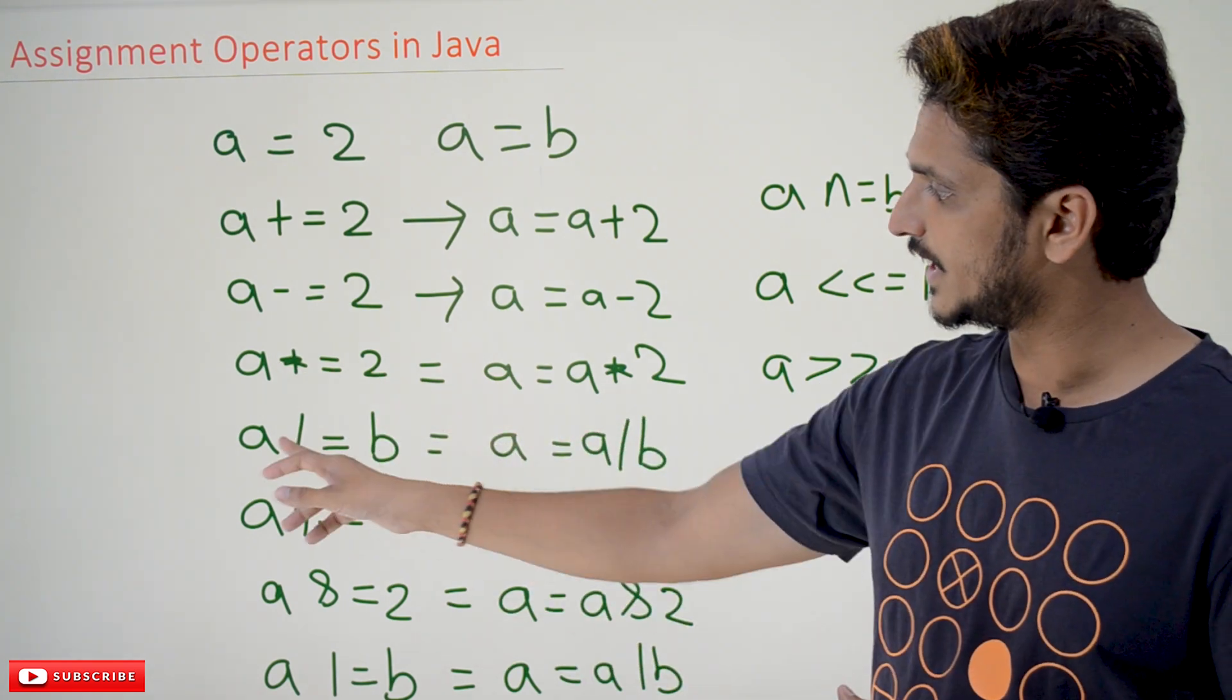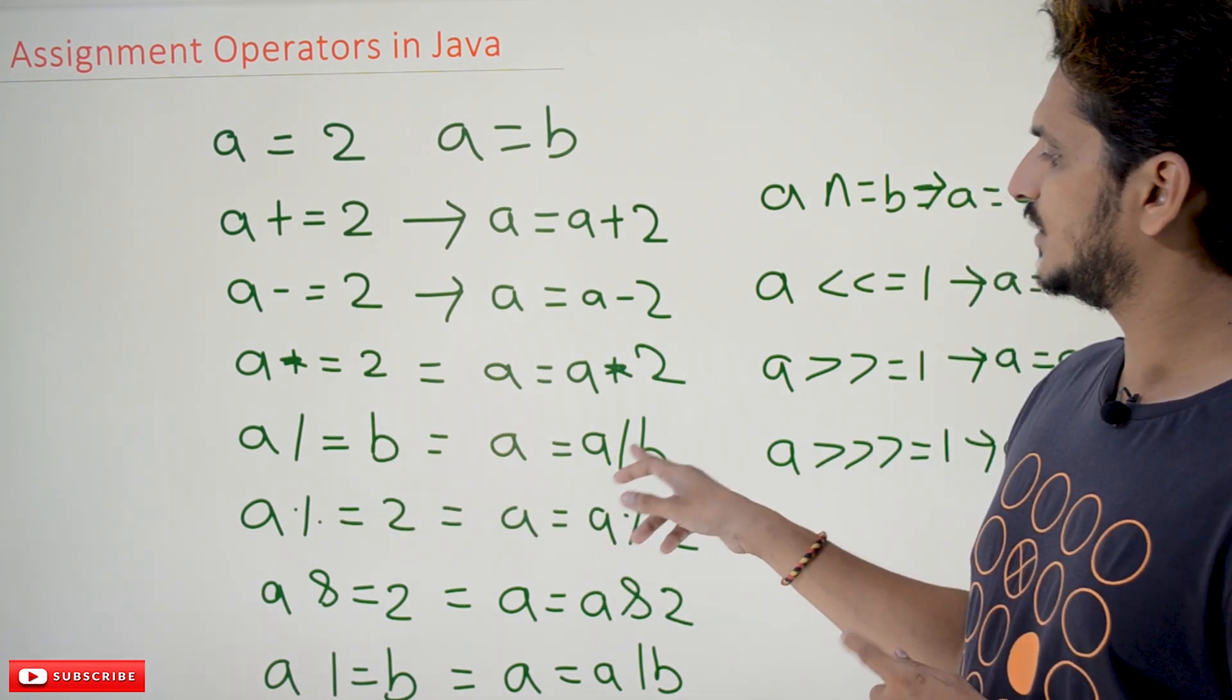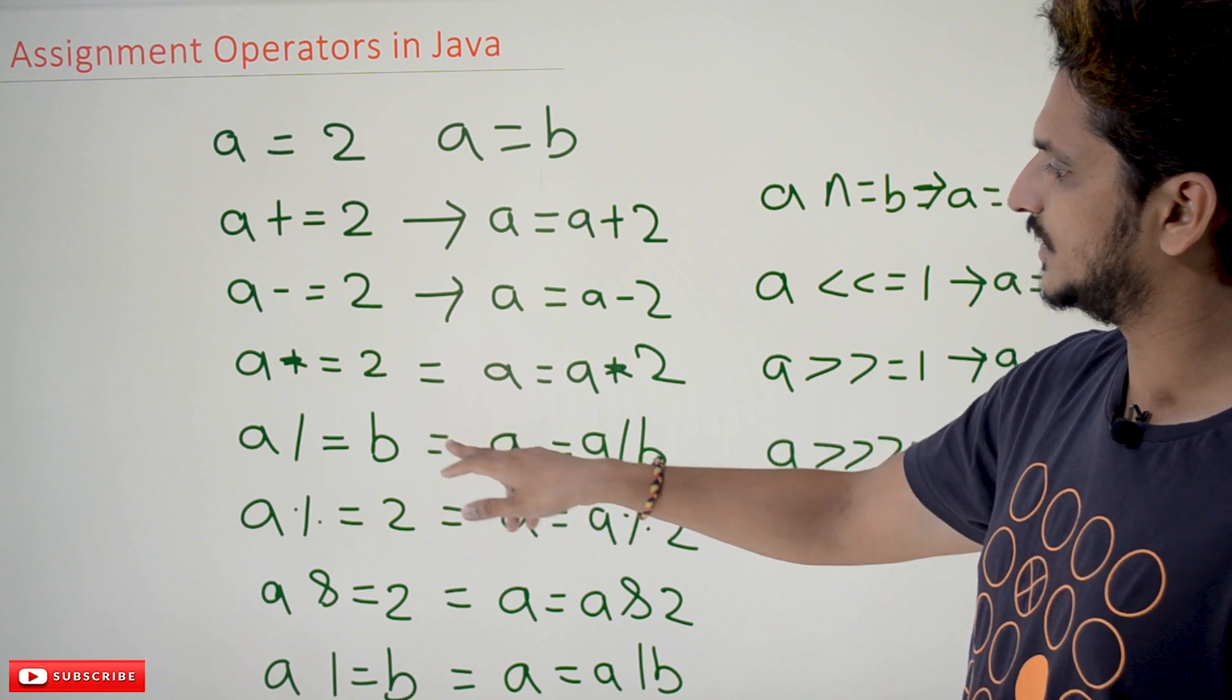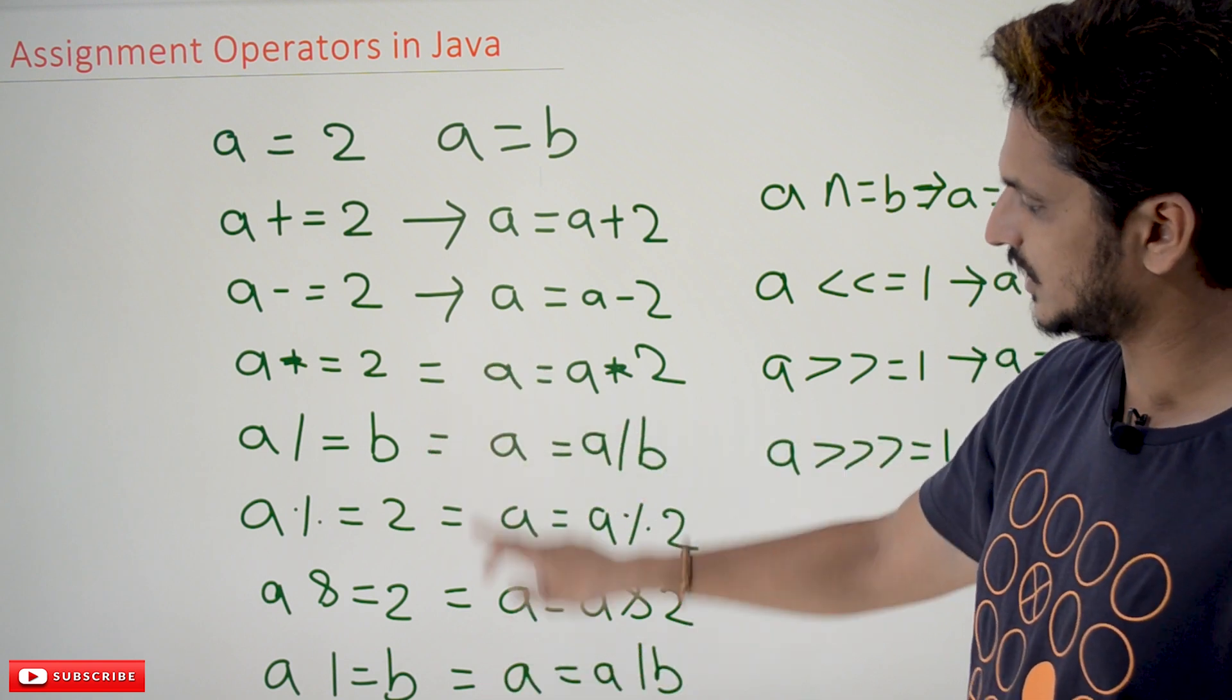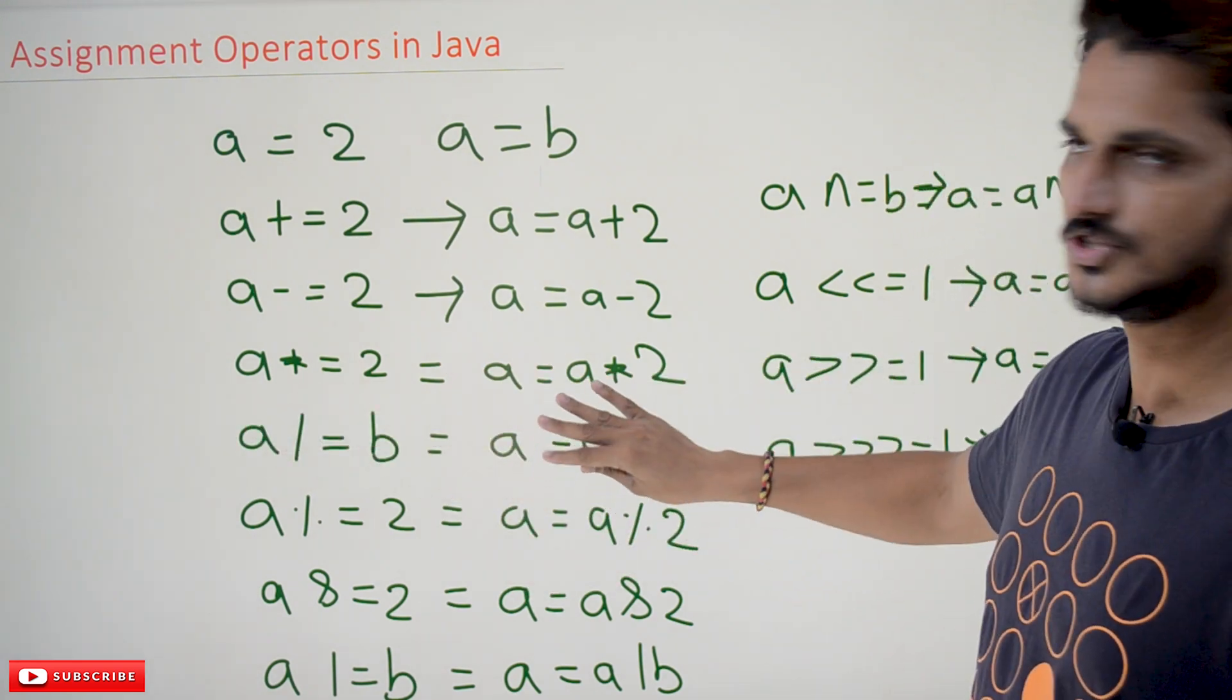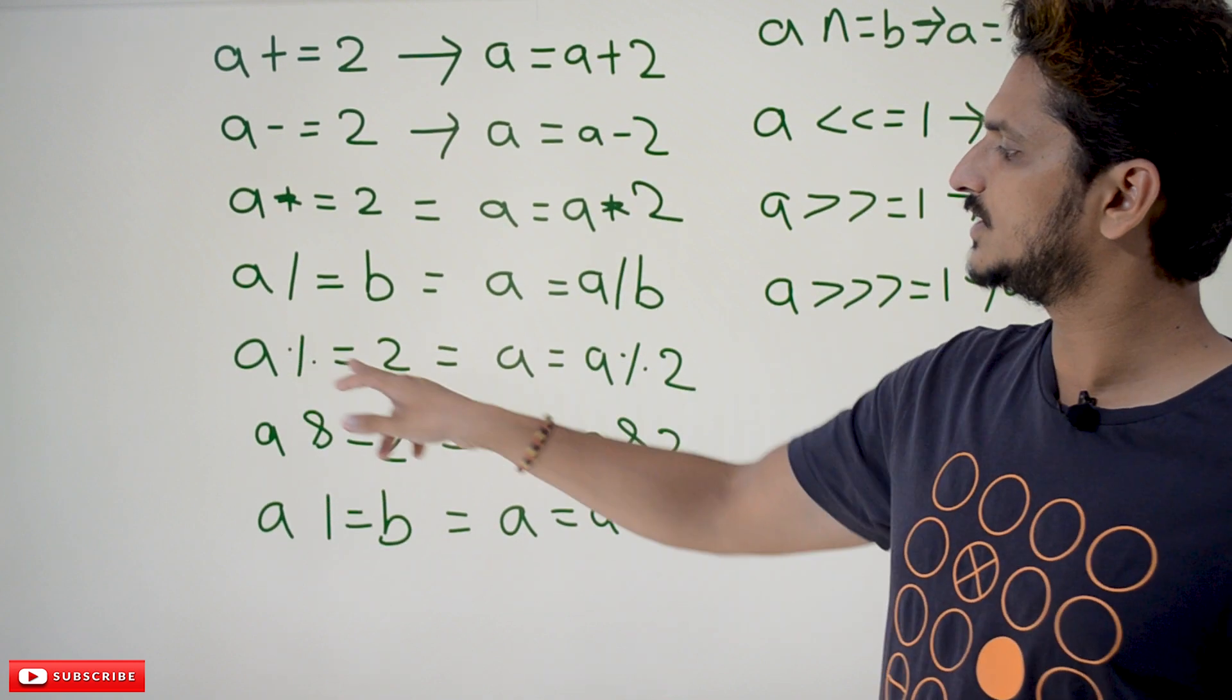Similarly, a divided by equal to b means a equal to a by b. So it is not equal to, arrow mark should be there. By mistake we have written equal to here. Arrow mark means this is exactly works as this statement a equal to a by b.